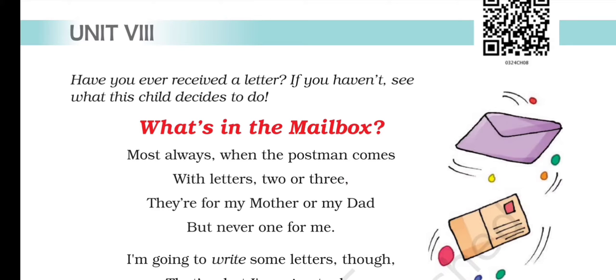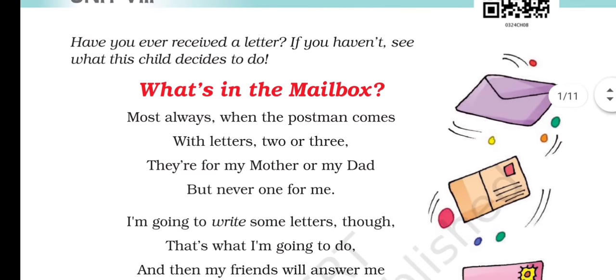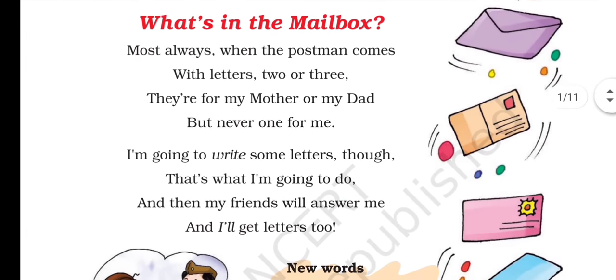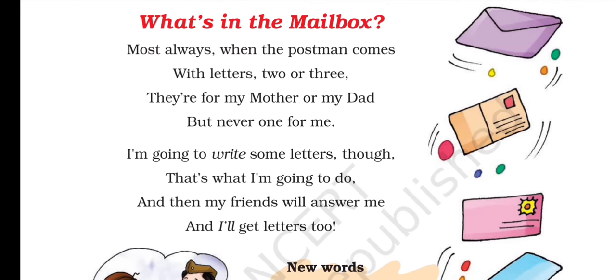Let's read the poem and understand its meaning. Most always, when the postman comes with letters 2 or 3, they are for my mother or my dad, but never one for me. So, most of the time when the postman visits this girl's house, he often brings 2 or 3 letters for her mother and father regularly, but he never gives any letter to her. This makes her sad as she expects a letter for herself too.